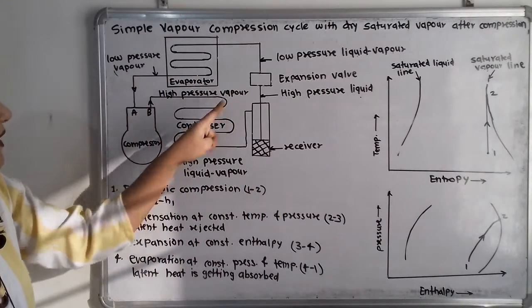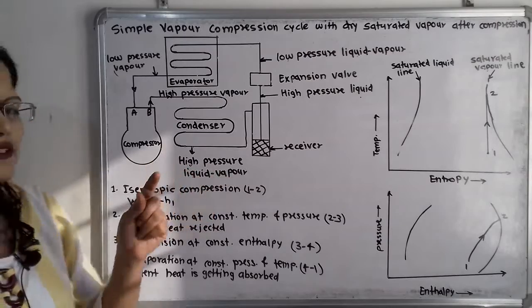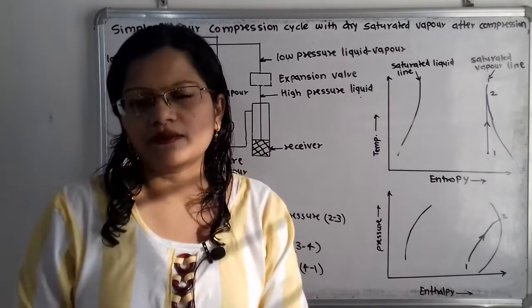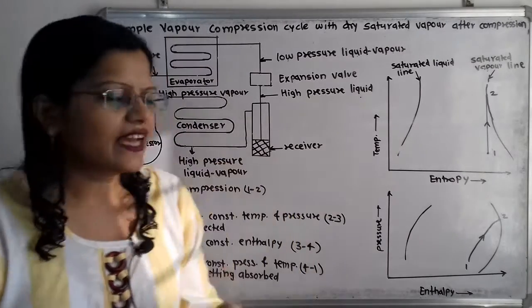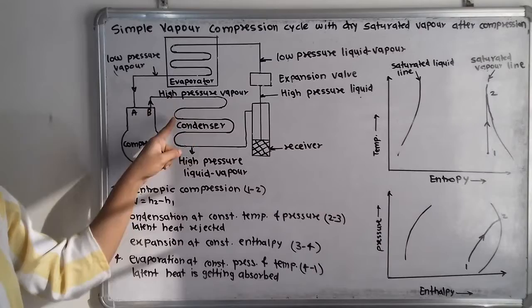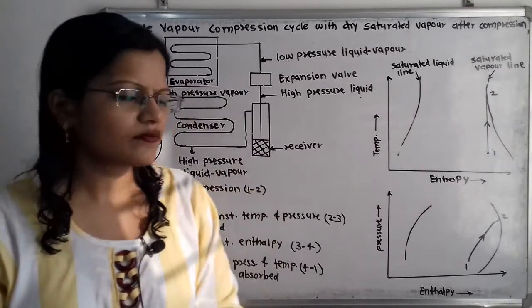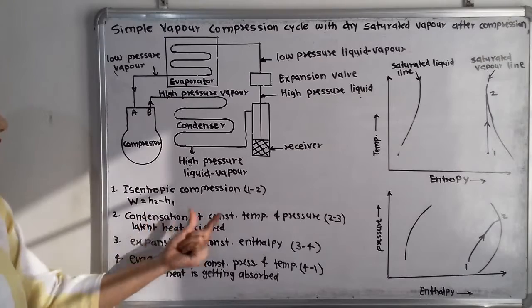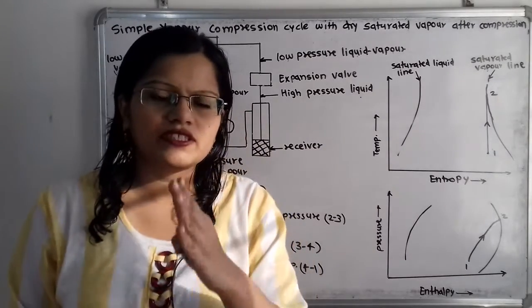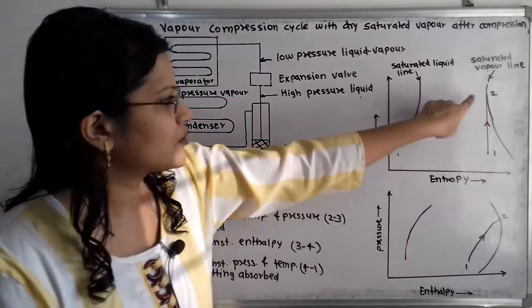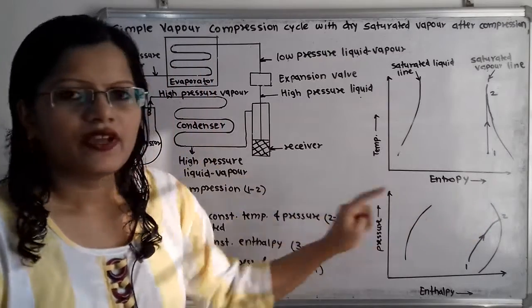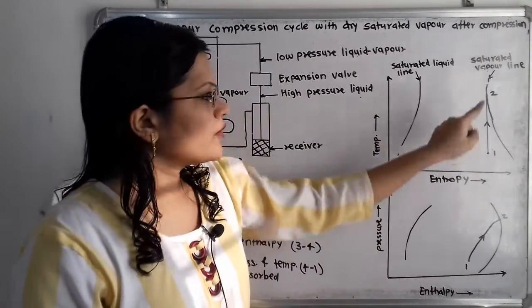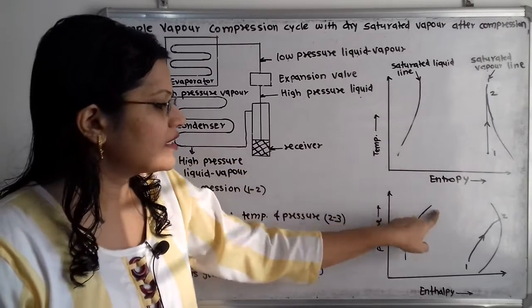Here the refrigerant changes from vapor to a liquid-vapor mixture — a phase change process. Heat is rejected to the surrounding medium, which may be air or water, and latent heat is released. Since condensation occurs at constant temperature and pressure, we end this process at the saturated liquid line.